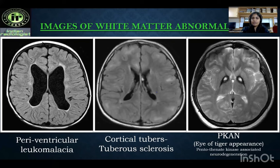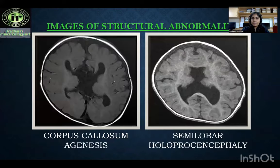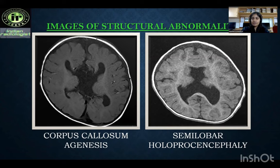Cortical tubers are seen in tuberous sclerosis. The eye of tiger sign is seen in PKAN — pantothenate kinase-associated neurodegeneration — in which symmetrical hyperintensity is noted in the globus pallidus. There is corpus callosum agenesis, showing a racing car appearance. Holoprosencephaly has three types: alobar, semilobar, and lobar. In semilobar holoprosencephaly, there is incomplete forebrain division.